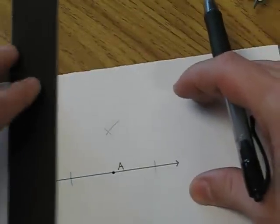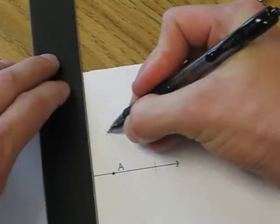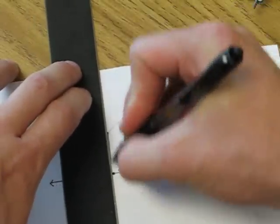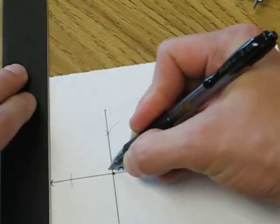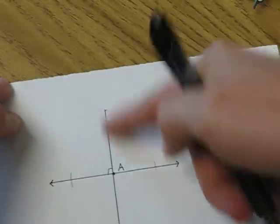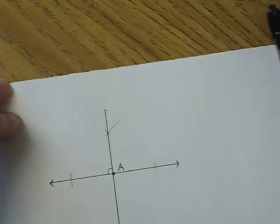This will give us a second point that we can connect with point A on the line and that will give us a right angle. So we have a perpendicular line through a point on a line.